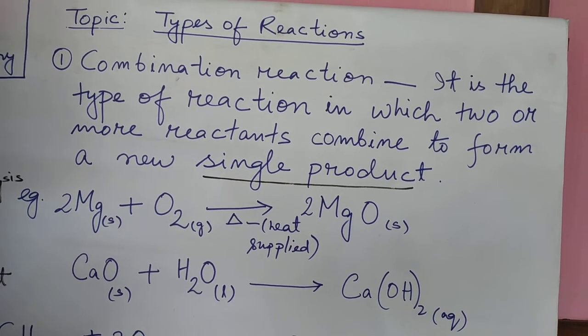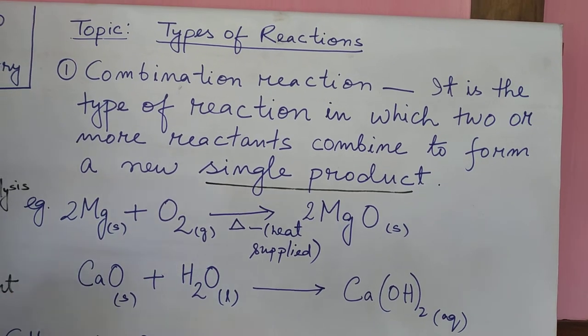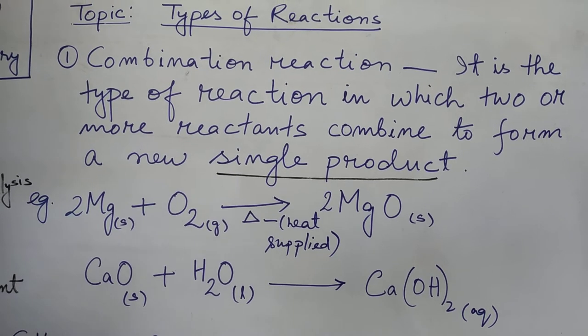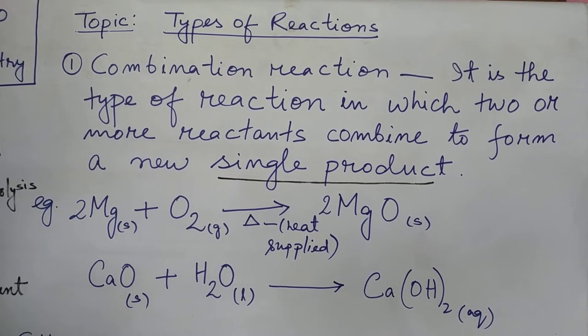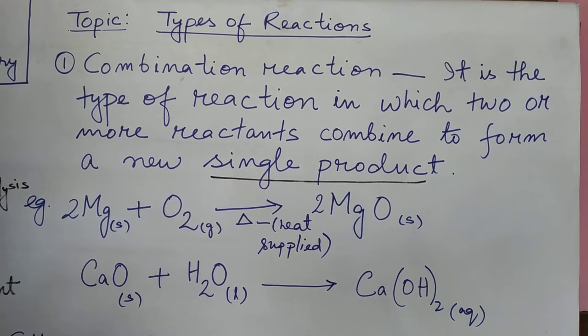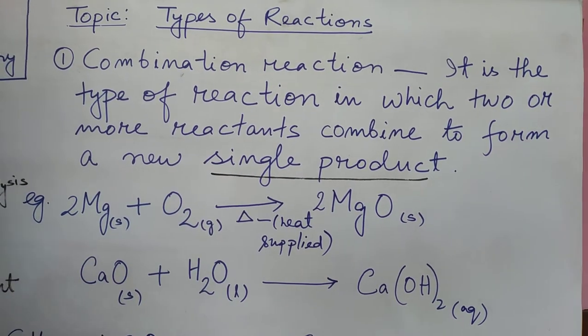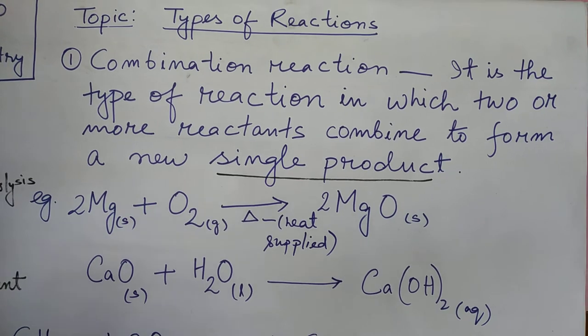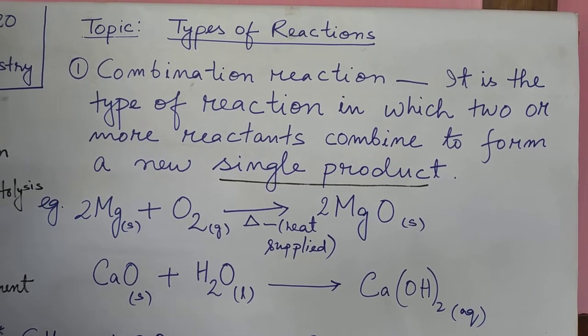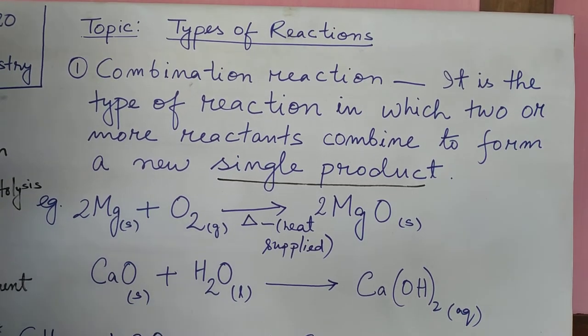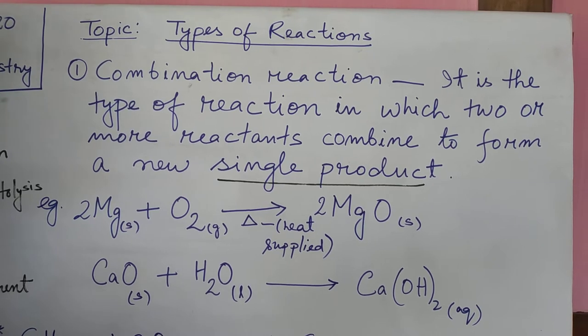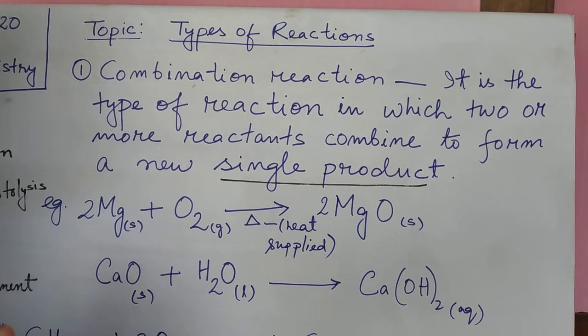Out of many types of reactions or equations given to you in exams, you will be able to identify which type of reaction is this by using this clue. That is single product. Many reactants may combine. Many means it can be more than two, four, five, six or many. Many reactants will combine to give only a single product. Single product means your product will be only one.